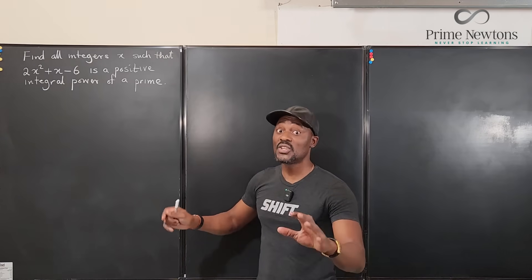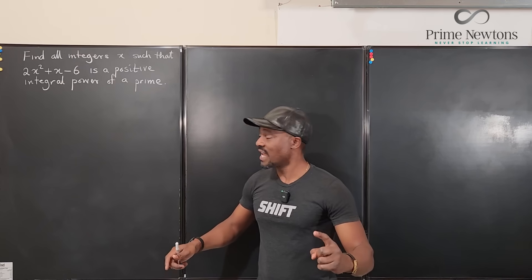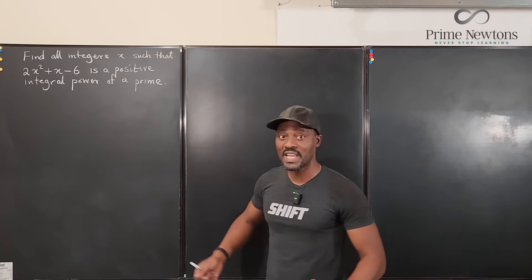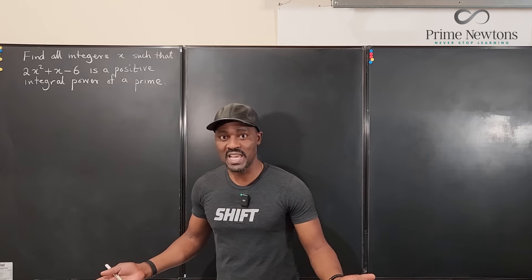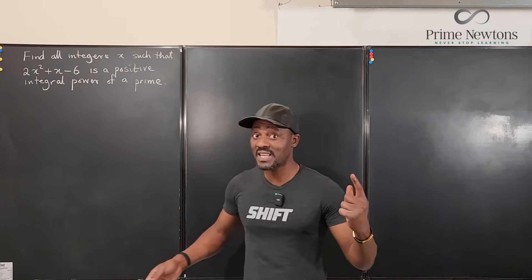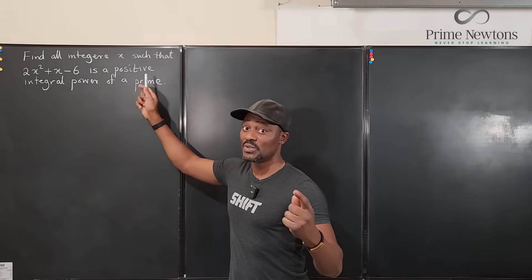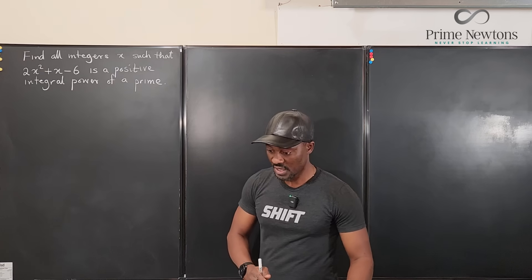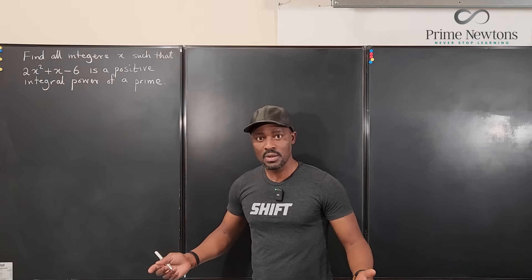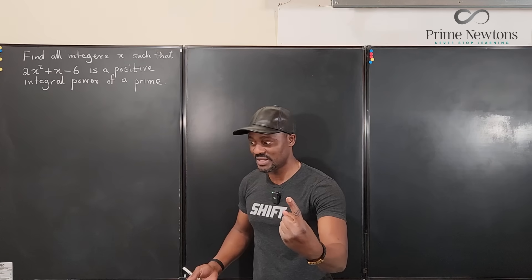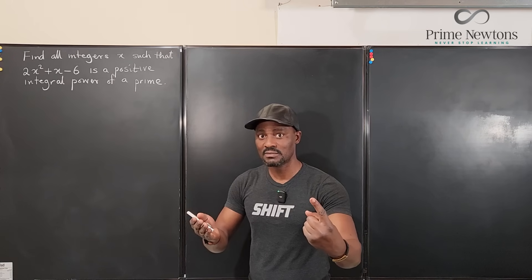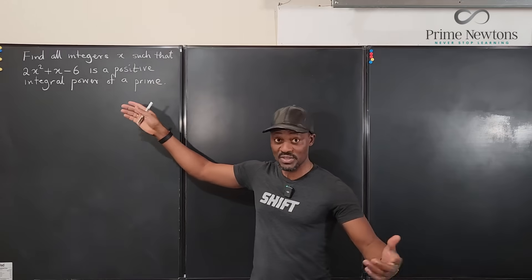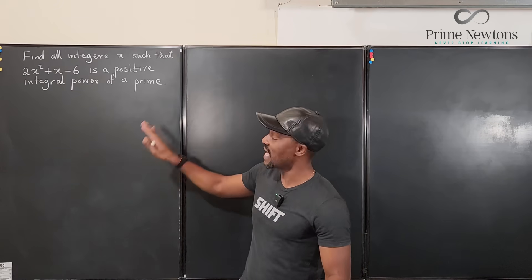What does that mean? It means your answer has got to be positive — that's number one. It has to be an integer and also a power of a prime number. So you can get answers like 2 to the third, which is 8. 25 is a good answer — that's 5 squared — or 49 (7 squared), or 3 to the fourth: 81 is a good answer. 1 is also acceptable because 1 can be written as 5 to the 0, an integral power of a prime.